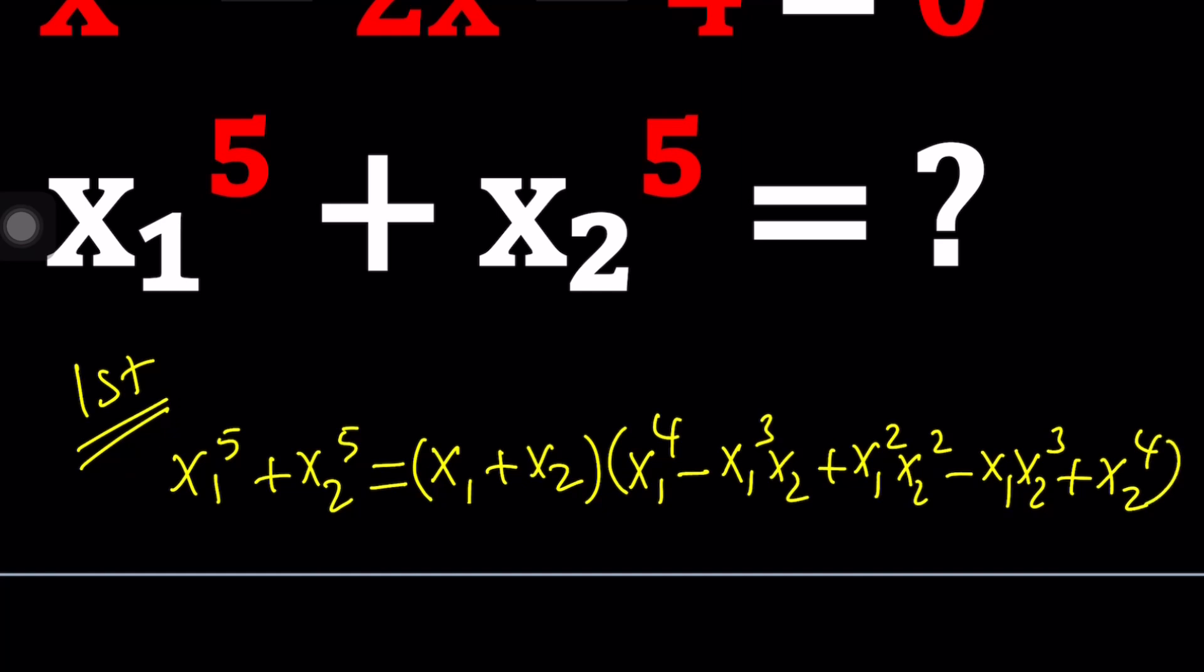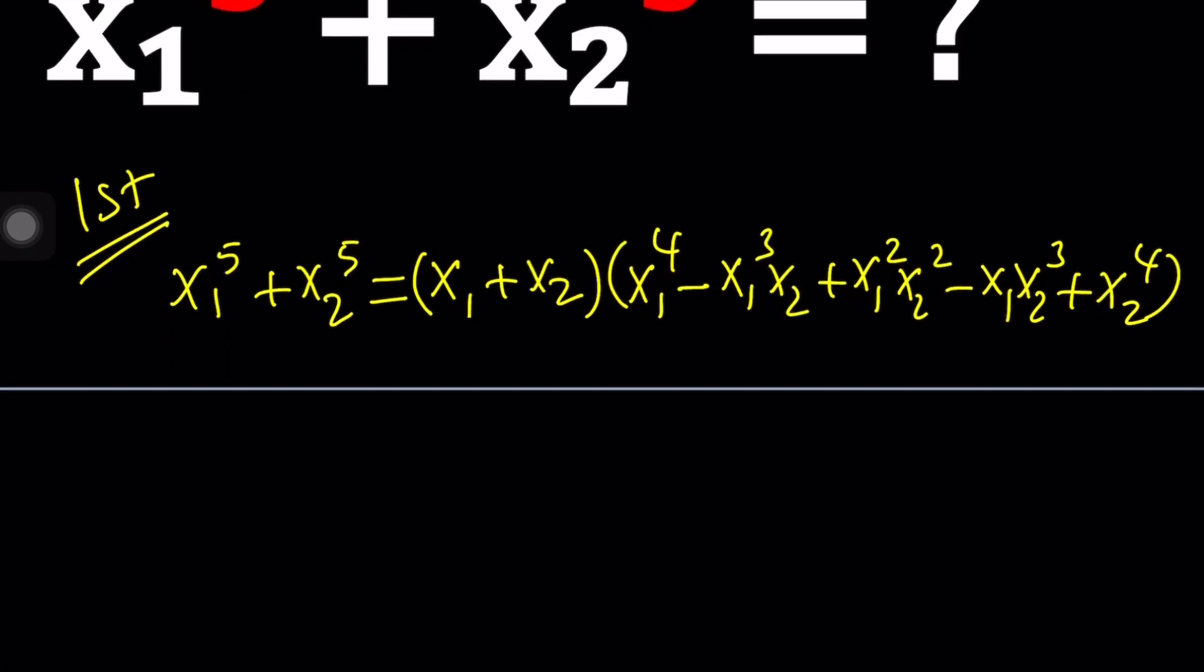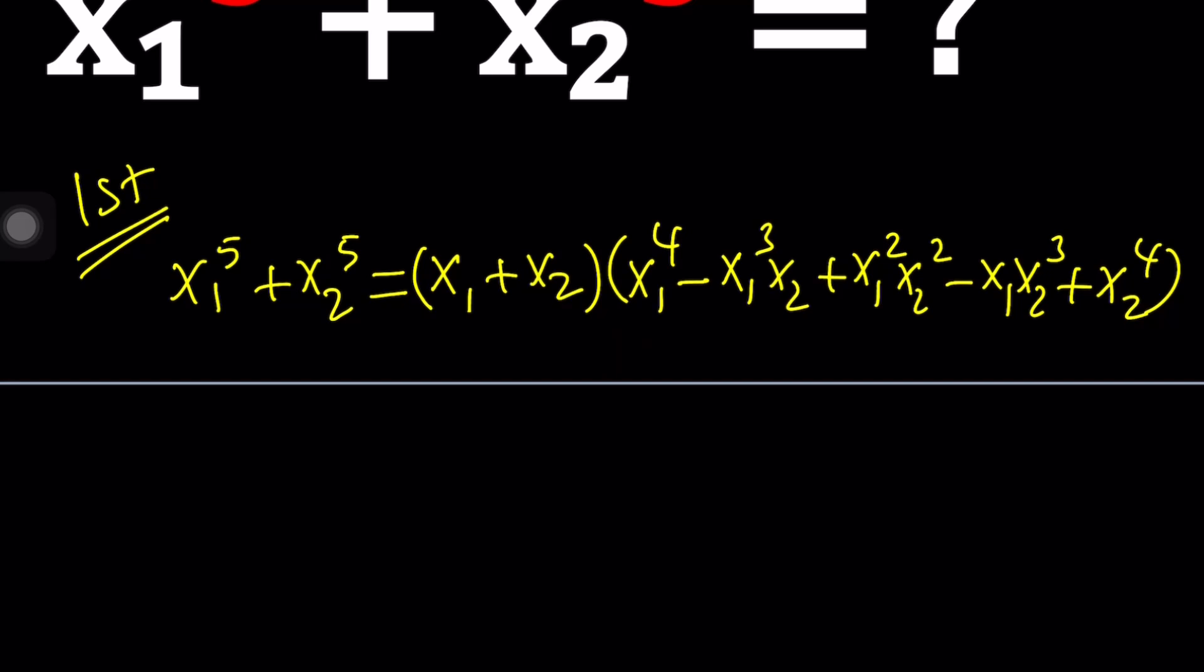Notice that the powers of x1 are going down and the powers of x2 are going up and the signs alternate. Now, we need to talk about a couple different things here. For example, we can find this easily, but there are other things that we need to find. For example, the sum of the fourth powers. How do you find that? There's a formula actually that allows you to find it.